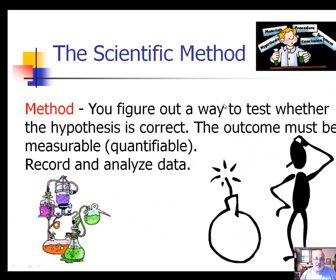Then you go to your experiment — you plan a way to test whether your hypothesis is correct, based on the materials you have in front of you. Can I design an experiment to put the chain back on my bike, fill up the tires, tighten the brake line? The outcome must be measurable and quantifiable — you must have numbers and units. Then you record and analyze the data: put it in a data table, put it into a graph — a friendly graph that other people can look at and understand.